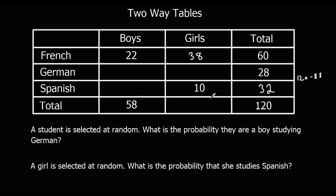Looking at the bottom row: there are 58 boys, we don't know how many girls, but there are 120 in total, so the missing number is 62. For the Spanish column, there are 10 girls doing Spanish and a total of 32 people, so there must be 22 boys. Going down the boys row: 44 plus 22 is 66, so the remaining boys in German must be 14, and that's 14 here as well.